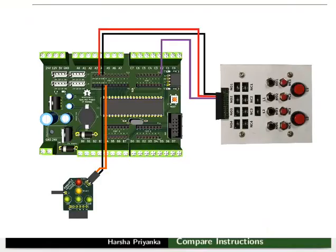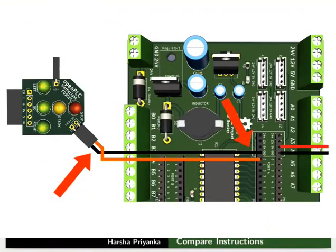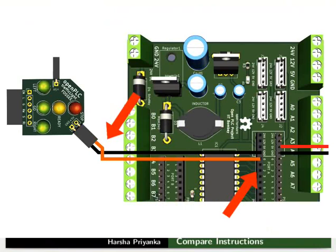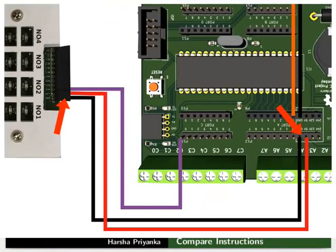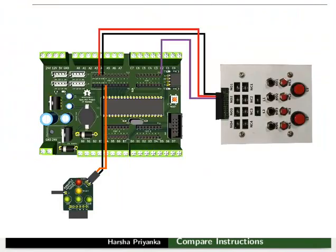Let us see the connection details now. Connect the Ground pin of the red LED of the traffic light module to Ground of the mainboard. Then connect the Plus 5V pin of the red LED to PA0 pin of the mainboard. Connect Ground and 5V of the switchboard to Ground and 5V of the mainboard respectively. Then connect NO1 of the switchboard to PC0 of the mainboard. Make the connections as shown in the picture.